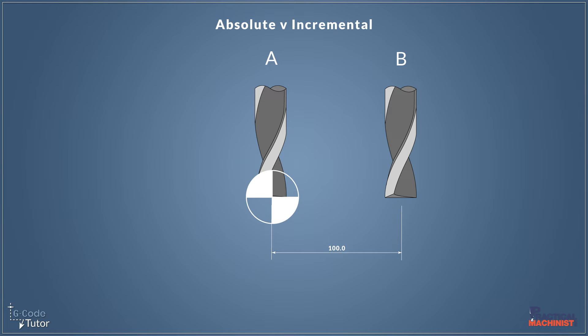One way to envision this is if we're using incremental positioning we can say that the datum shifts to the tool position every time we move the tool. So it's like everything resets — our x, y, and z positions all become zero as soon as we move the tool. So the tool is now the new datum position.